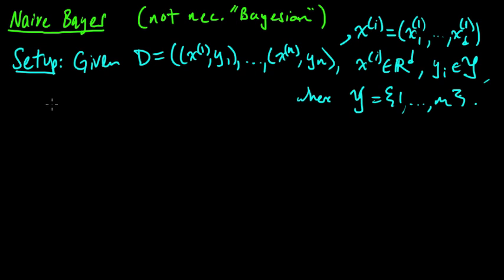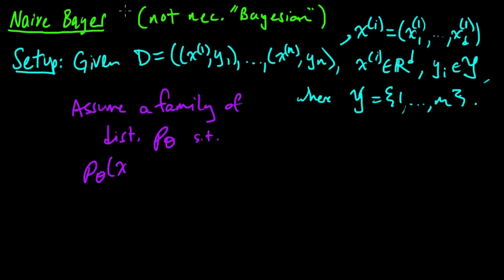So that's what we're given. And we will assume, under the Naive Bayes approach, we assume a probabilistic model in the following way. So we assume a family, some set of distributions, a family of distributions, parametrized by some parameter theta, could be a vector, just some parameter here. And these distributions will have the following property. This is the key property. So each of these is a distribution, it's a joint distribution. So Naive Bayes is a generative model. So in contrast to a discriminative model, we're going to assume a joint distribution on x and y.